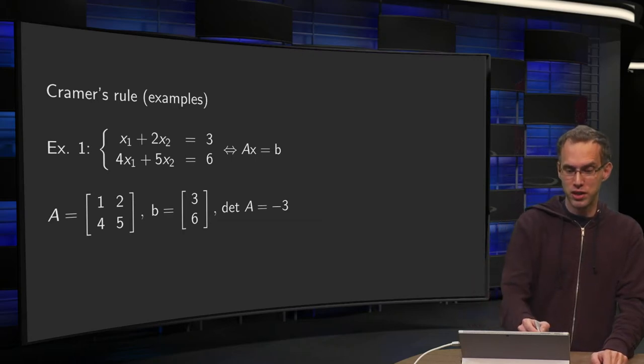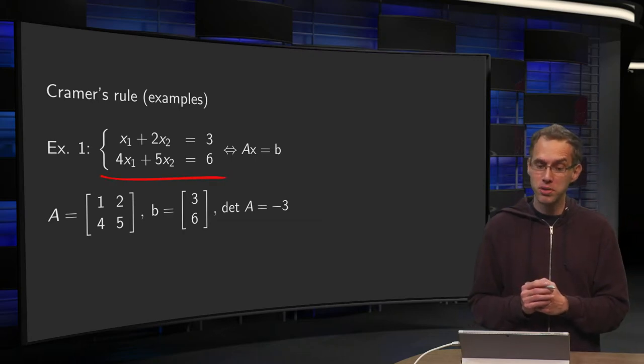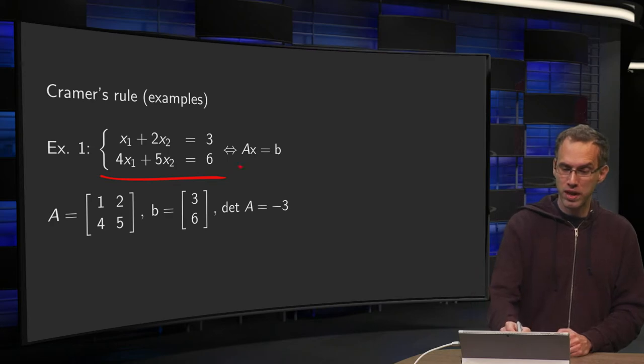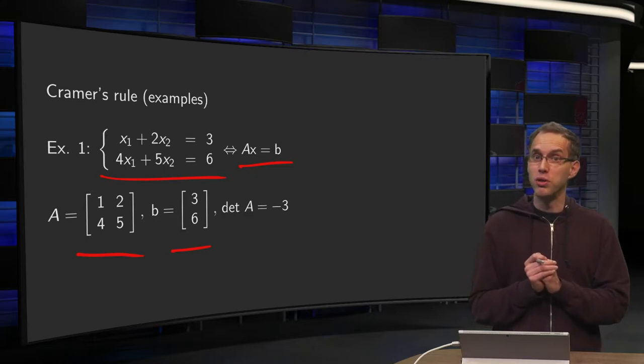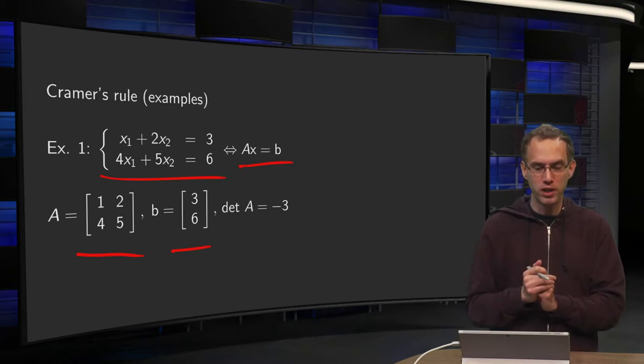So first we have this linear system over here, two equations, two unknowns, and we can rewrite it in the form Ax equals b with our matrix A over here, vector b over there. It's of course really easy to solve this using row reduction. We will use Cramer's rule just to see how this rule works.